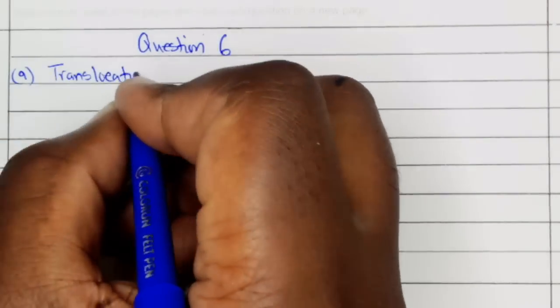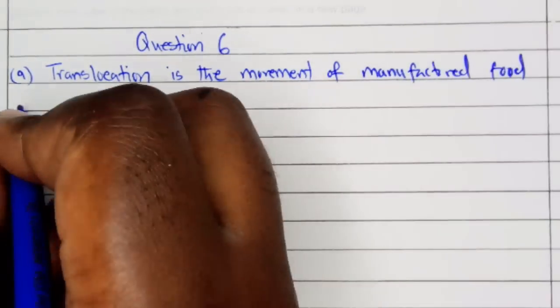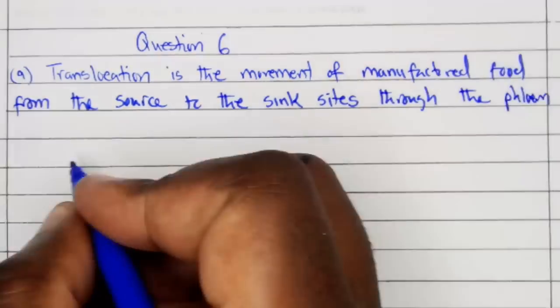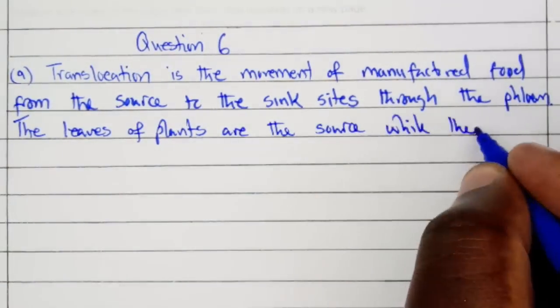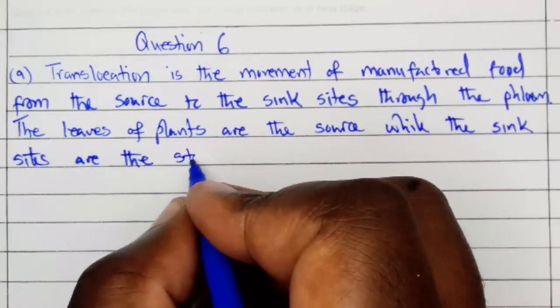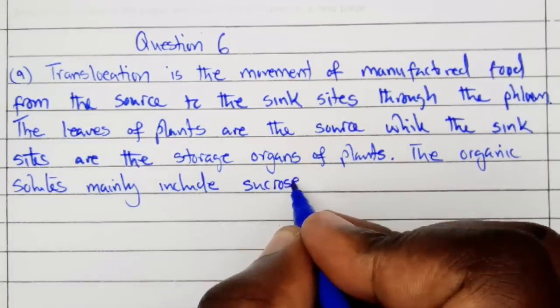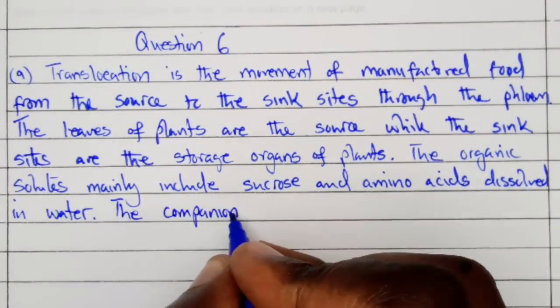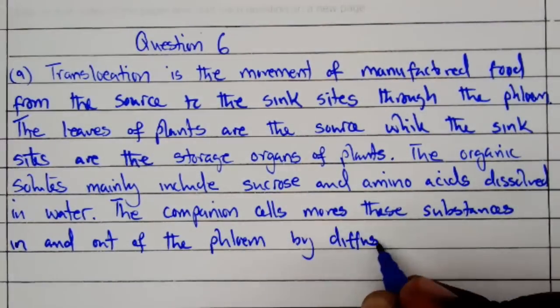Question 6A: Translocation is the movement of manufactured food from the source to the sink sites through the phloem. The leaves of the plants are the source, while the sink sites are the storage organs of plants. The organic solutes mainly include sucrose and amino acids dissolved in water. The companion cell moves these substances in and out of the phloem by diffusion and active transport.